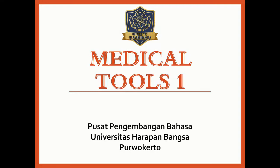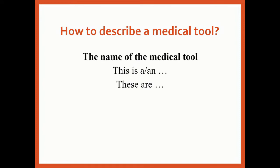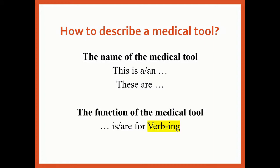Hello everyone. I'd like to explain about medical tools, part 1. This is how to describe a medical tool. To describe the name of the medical tool, you can use 'this is' for a singular noun and 'these are' for a plural noun. When describing the function of the medical tool, you can use the form: '[tool] is or are for [function].' Now let's go to the vocabulary and function of the medical tools.